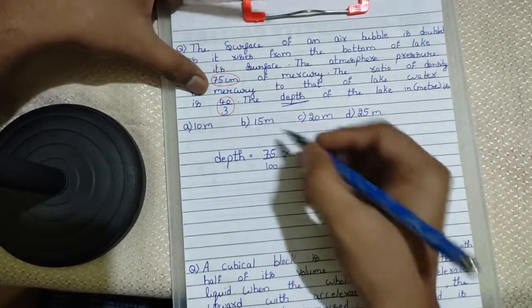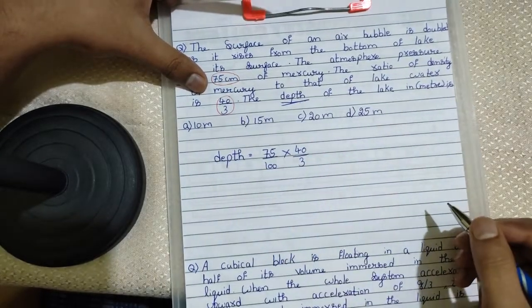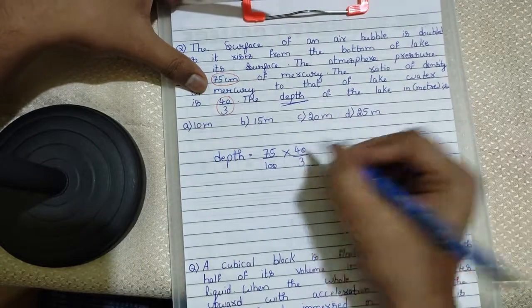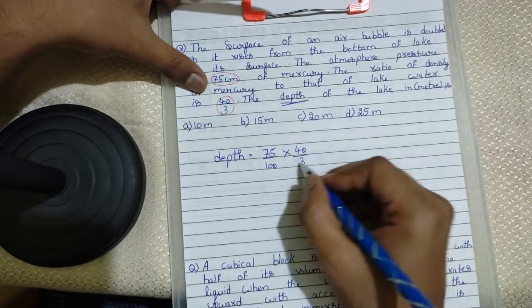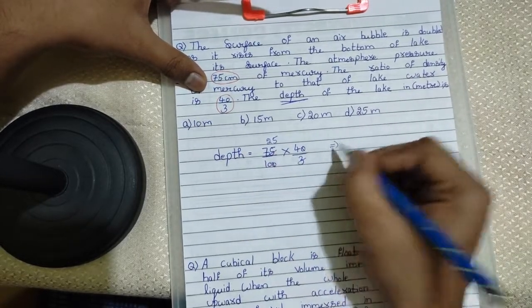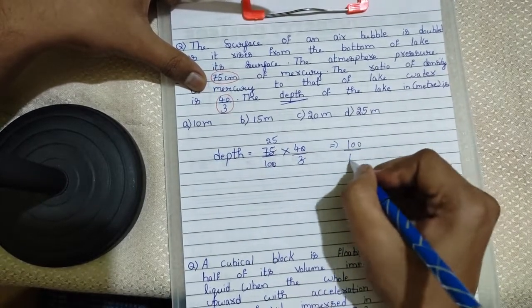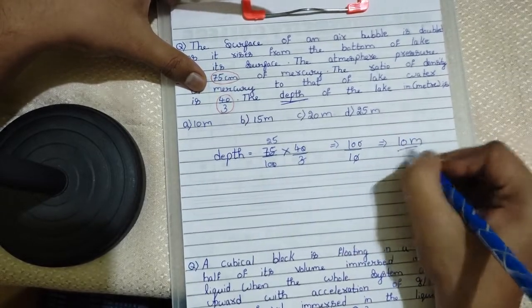Now, next multiply this number, the density. Just calculate, simple math. And here goes the answer: 3, 25. Now 25, 4 is 100 by 10. Zero cancels. So, 10 meter is your answer in just one line.